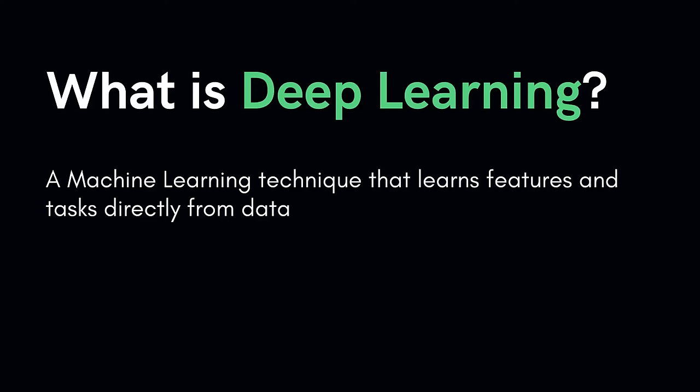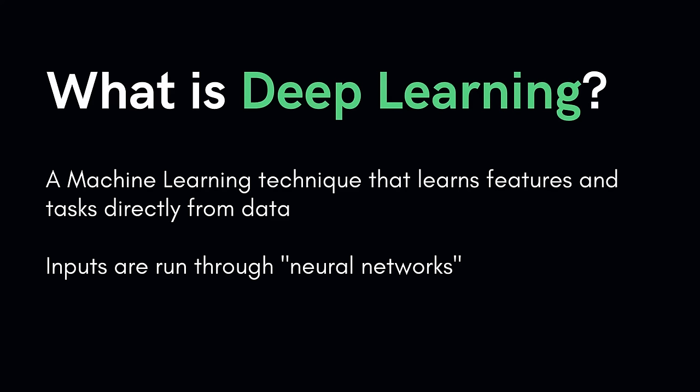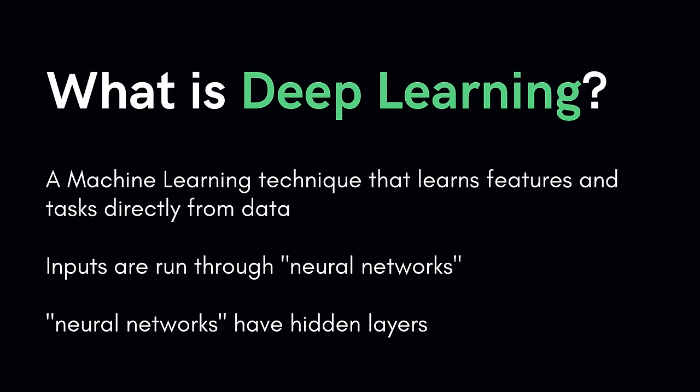To put it simply, deep learning is a machine learning technique that learns features and tasks directly from data by running inputs through a biologically inspired neural network architecture. These neural networks contain a number of hidden layers through which data is processed, allowing the machine to go deep in its learning, making connections and weighing inputs for the best results.